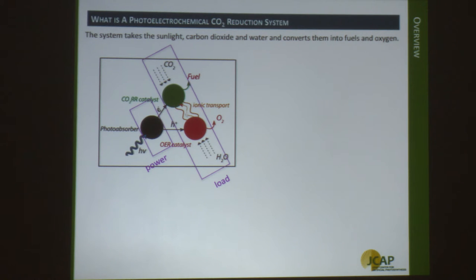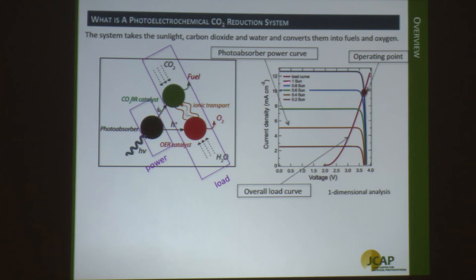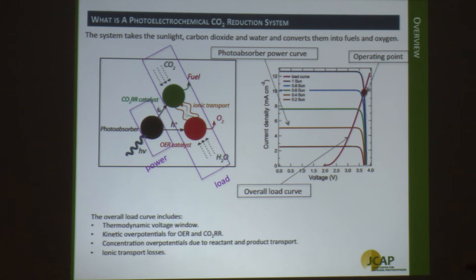One way to think about the operating principle is to consider the photoabsorber as the power component and the rest of the system as the electrochemical load. The photoabsorber produces a photodiode curve or power curve at different illumination intensities, while the electrochemical load curve tells you how fast you're driving the overall reaction at a given voltage. One component is the thermodynamic voltage window — for CO2 to CO with water oxidation, that's around 1.3 volts minimum.